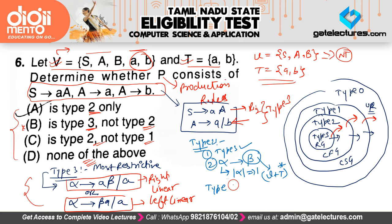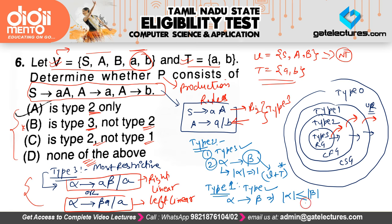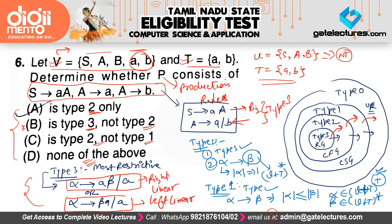For a Type 1 grammar, it must first satisfy Type 2 conditions, and additionally, for productions alpha derives beta, the length of alpha must be less than or equal to the length of beta. Alpha can be any combination of (variable ∪ terminal)+ and beta can be any combination of (variable ∪ terminal)*. For Type 0, this length condition is also not required.